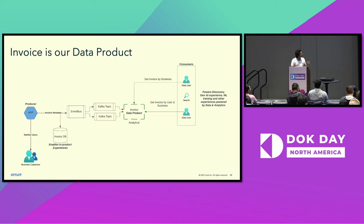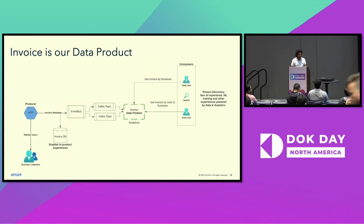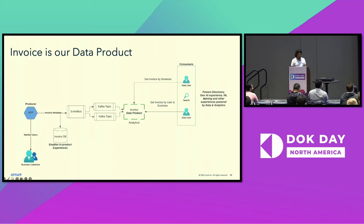There is the operational user, which is the producer — the application — and also the analytical user, who are data users that utilize the data arriving in the data lake. The producer produces data to an event bus, which is our Kafka infrastructure, that gets streamed to the data lake. What arrives in the data lake we consider as a data product. From that data, we can do queries such as getting invoice by business or invoice by user and business, enabling both in-product experiences and Gen AI and ML training use cases.